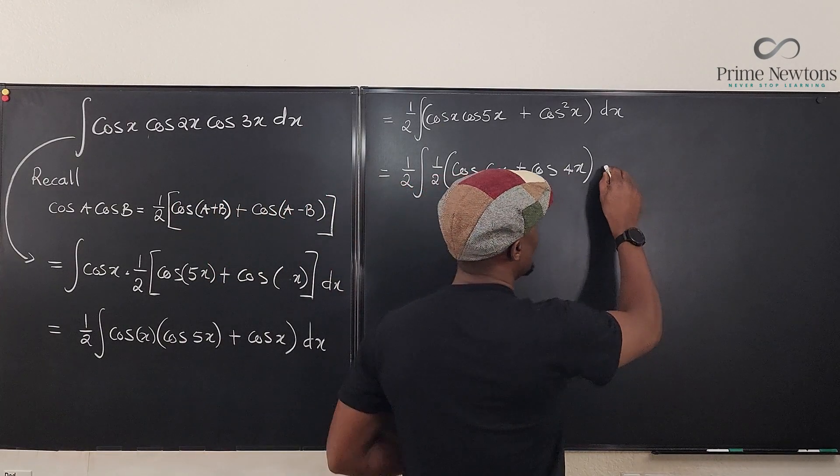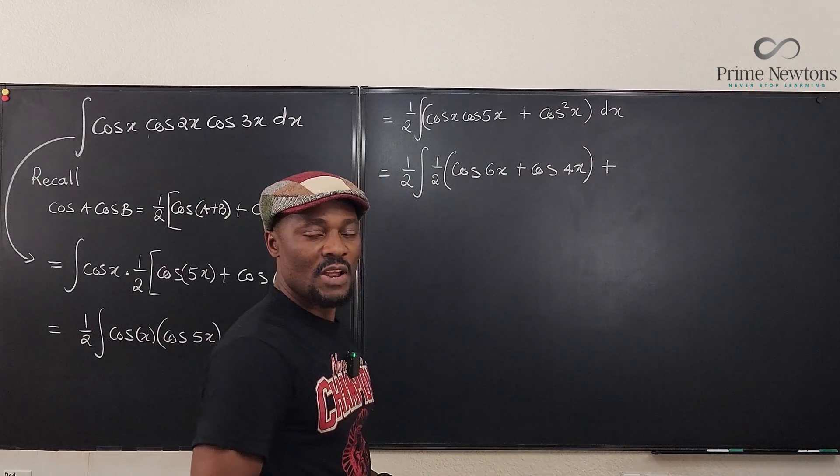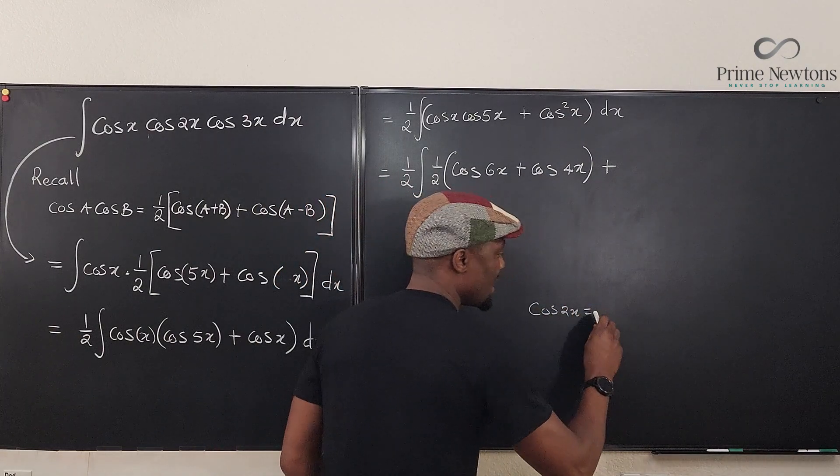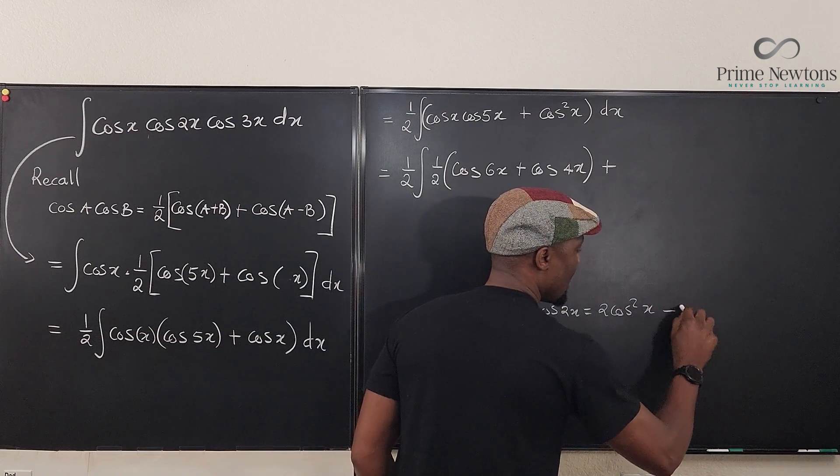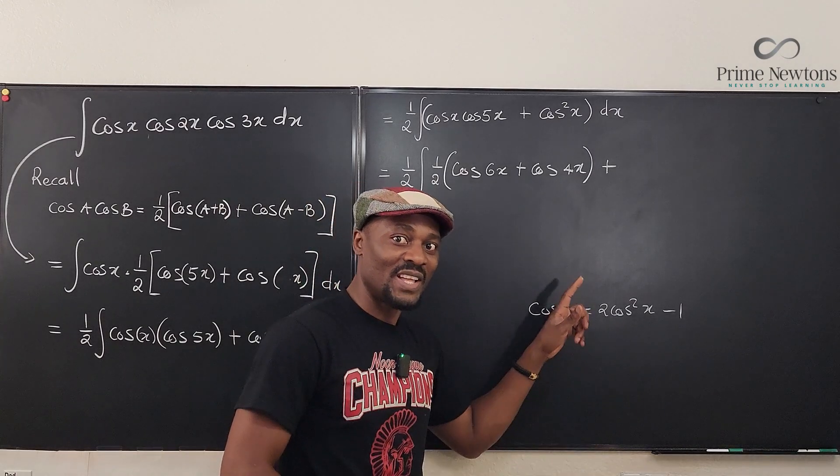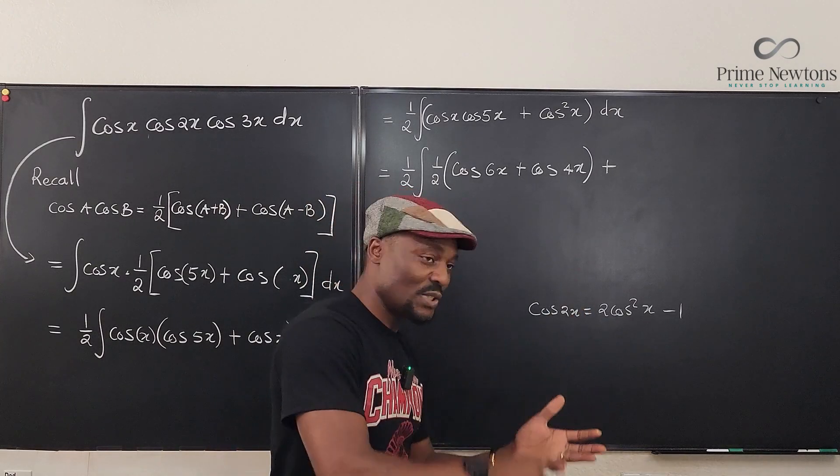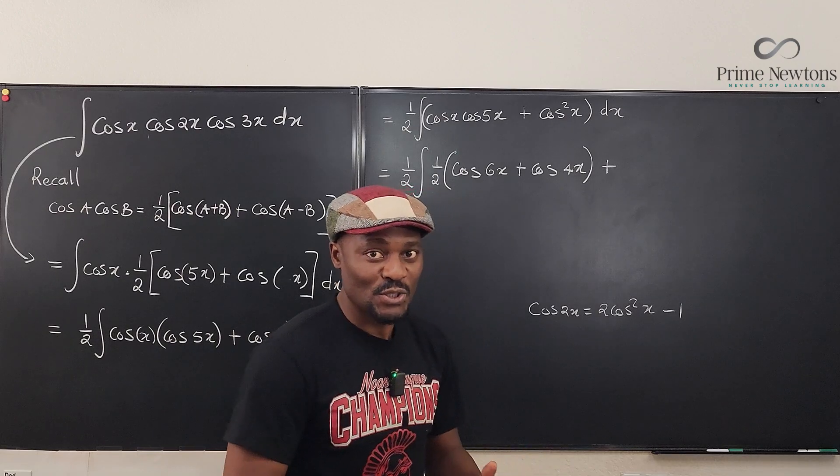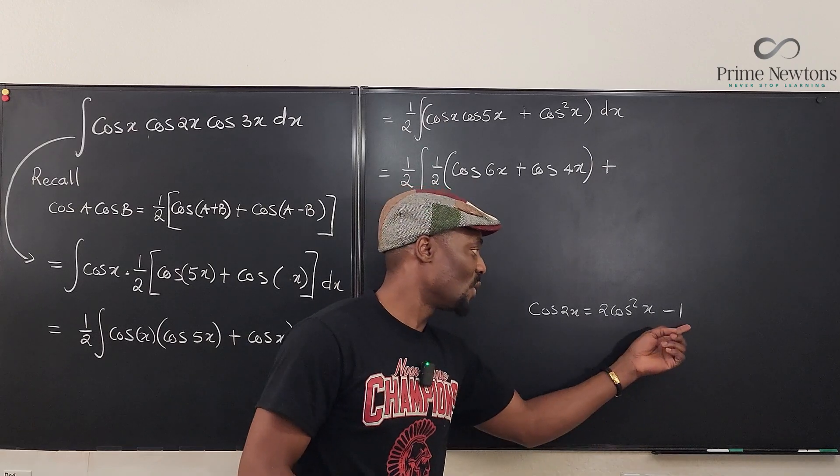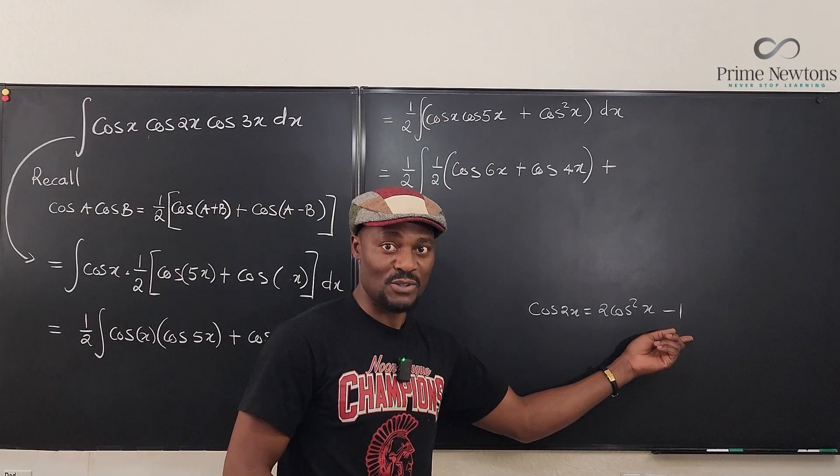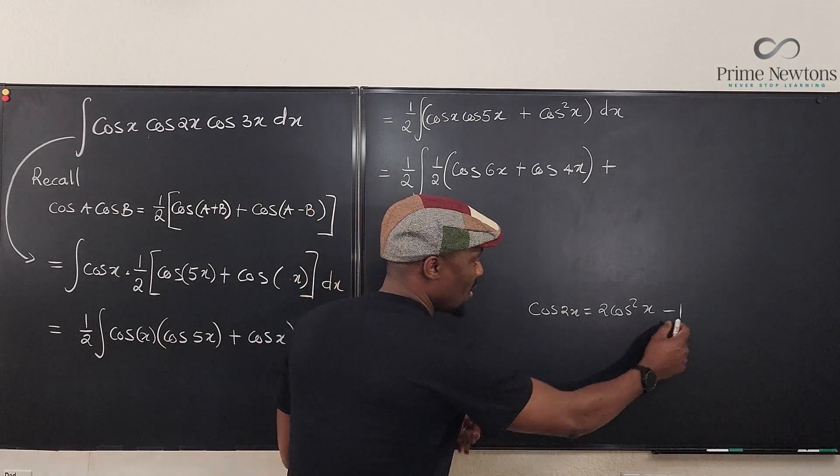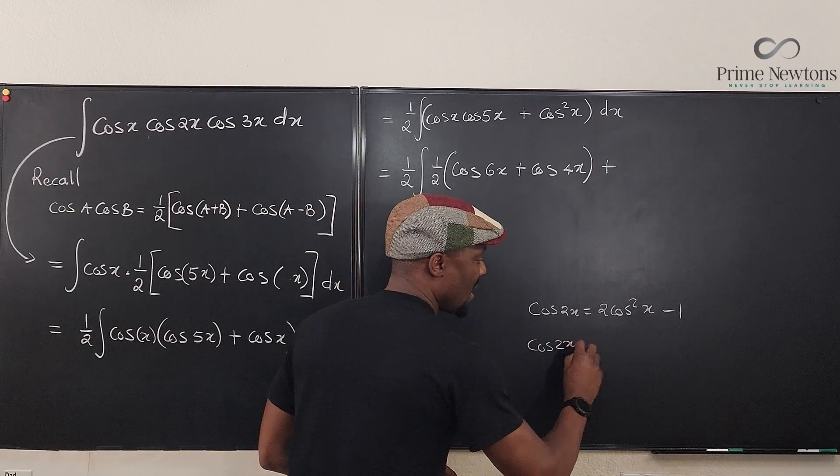And then we go here plus. Now what's going on with this one? Remember that cosine 2x is the same thing as 2 cosine squared x minus 1. This is an identity you have to recall from the double angle identity. That is cosine a plus b is equal to cosine a cosine b minus sine a sine b. And then you use the Pythagorean identity to eliminate the sine squared. And then you're going to have minus one left.